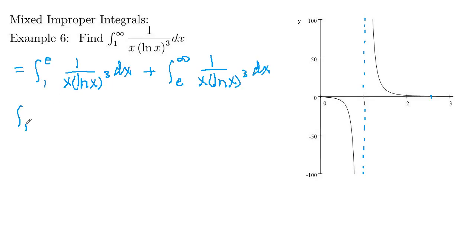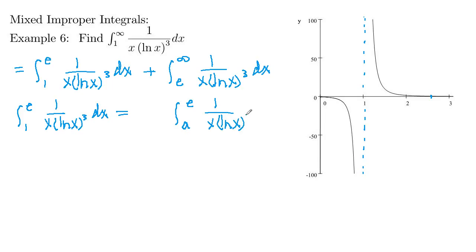For the integral from 1 to e of 1 over x ln(x) cubed dx, the trouble spot is at 1, so we replace the lower limit with a variable: the integral from a to e of 1 over x ln(x) cubed dx, and then take the limit as a approaches 1 from the positive side. We're starting from a finite interval and letting a approach 1, taking more and more of that infinite vertical strip to see what happens.